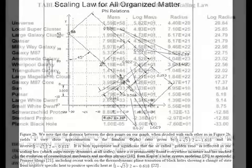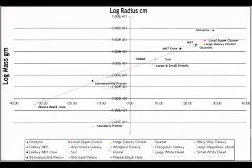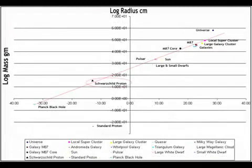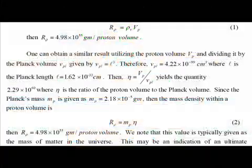Now it turns out if we plot every object in the known universe onto a logarithmic scale of mass versus radius, we find an approximate linear progression. Oddly enough, the Schwarzschild proton sits almost exactly on this line, while the standard model proton sits far outside, suggesting that the standard model is incorrect after all.